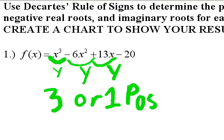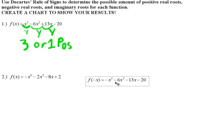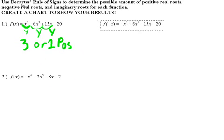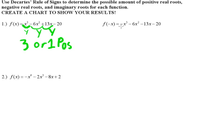Then we want to find f of negative x by plugging in negative x for each x. We don't have to do that each time because the effect is that only the odd degree terms actually change signs. Positive x cubed changed to negative x cubed, while negative six x squared stayed the same. Positive thirteen x changed to negative thirteen x, and the constant terms stayed the same. Now we count sign changes in f of negative x: negative to negative — no; negative to negative — no; negative to negative — no. So there are zero negative zeros for this function.